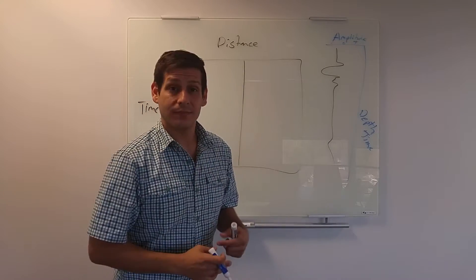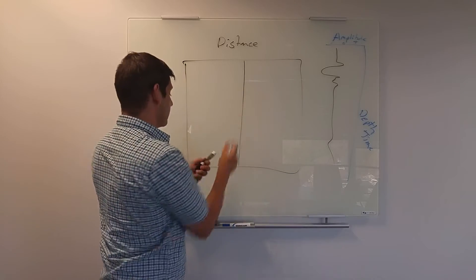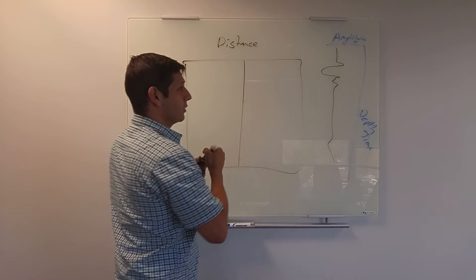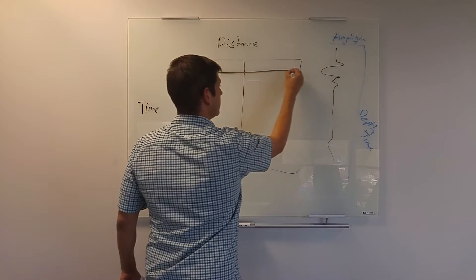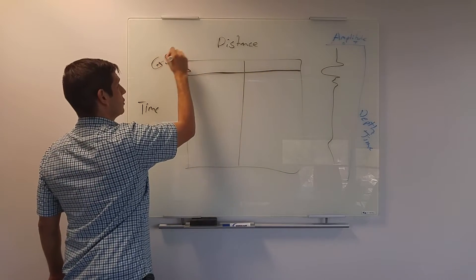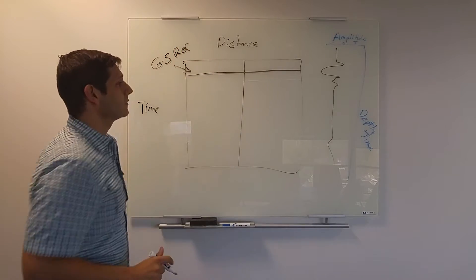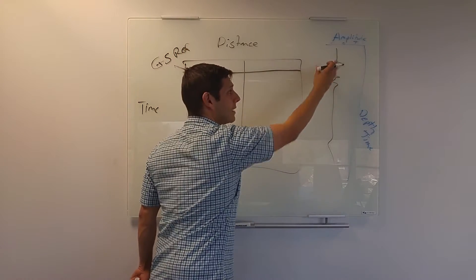The further away from this zero that your wigglegram is expanding in either the negative or the positive direction, the greater the amplitude. What does that mean? In this case, what we might be seeing with this is the ground surface, your ground surface reflection.